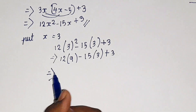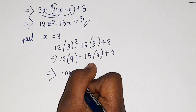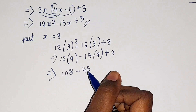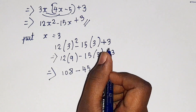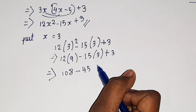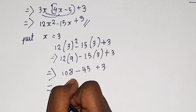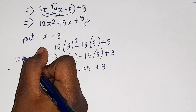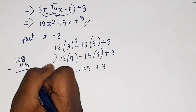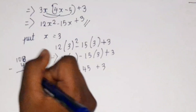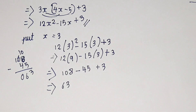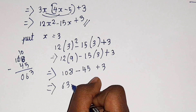Now we shall multiply. 12 into 9 is 108. So 108 minus 45 — how 45? Because 15 into 3 is 45, and minus into plus is minus. So minus 45 plus 3. Now we subtract: 108 minus 45. 8 minus 5 is 3 and 10 minus 4 is 6, so 63. The greatest number sign is plus, so plus 63 plus 3.